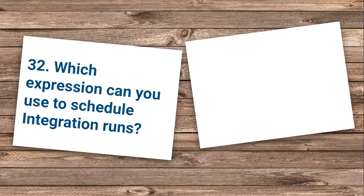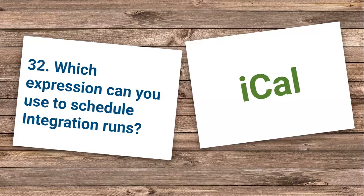Question 32: Which expression can you use to schedule integration runs? This is a compulsory question that can also appear in certifications. If you are a real-time OIC developer you can simply answer this. We have already discussed it — the answer is iCal. We use the iCal expression to schedule integration runs, and we have both Simple and iCal options available.